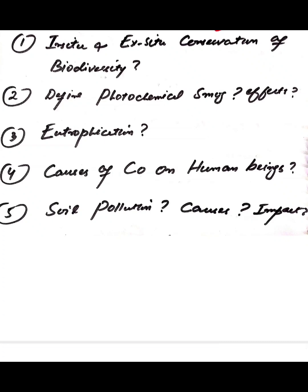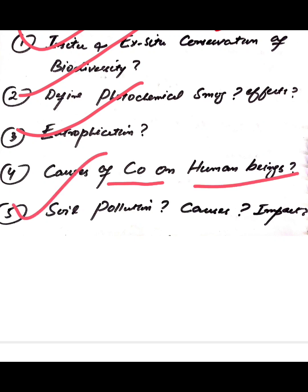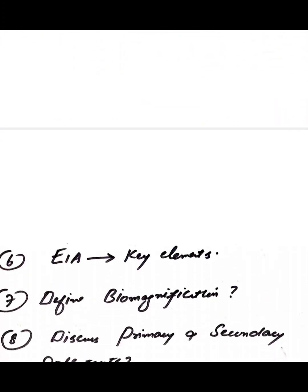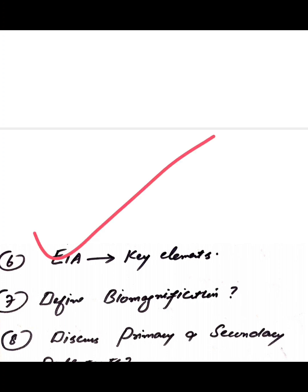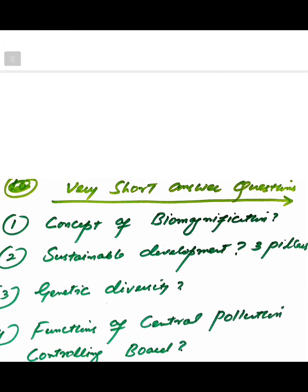For medium answer questions: first, what is in-situ and ex-situ conservation of biodiversity; second, define photochemical smog and its effects; third, what is eutrophication; fourth, what are the causes of carbon monoxide and its effects on human beings; fifth, define soil pollution, its causes and impact on environment; sixth, what is EIA and what are its key elements; seventh, define biomagnification; eighth, discuss primary and secondary pollutants; ninth, discuss biological ways of soil conservation.